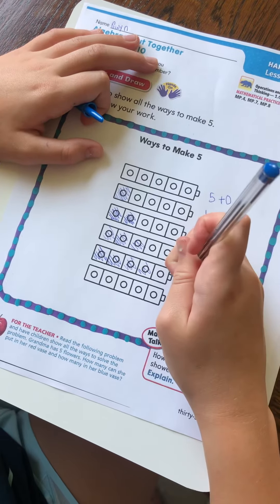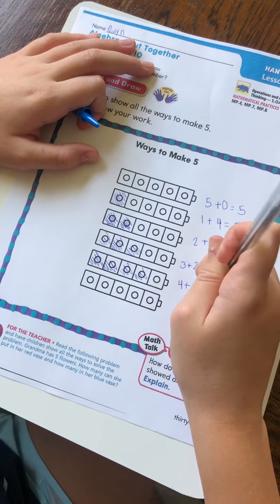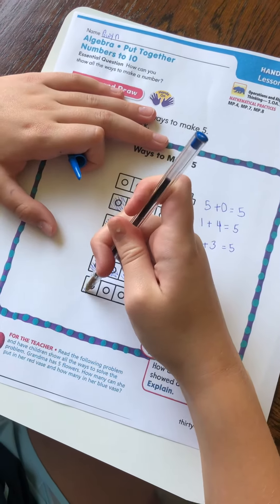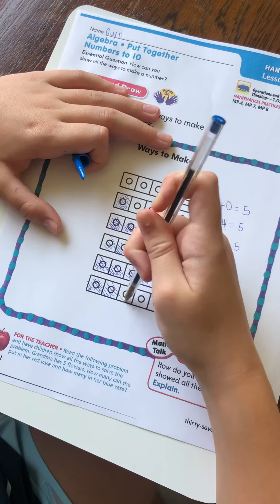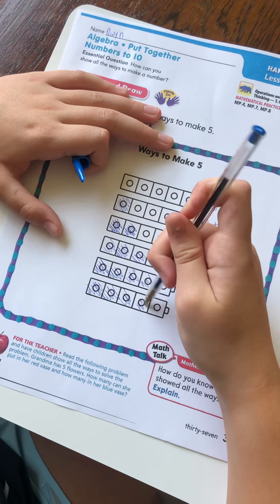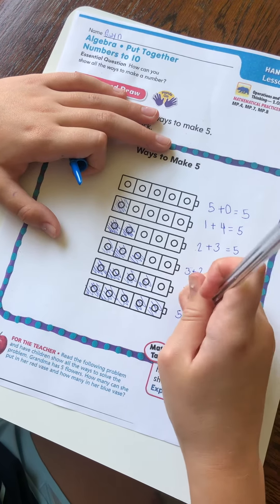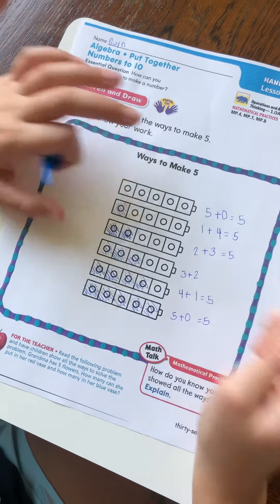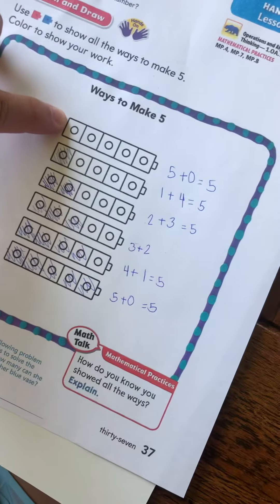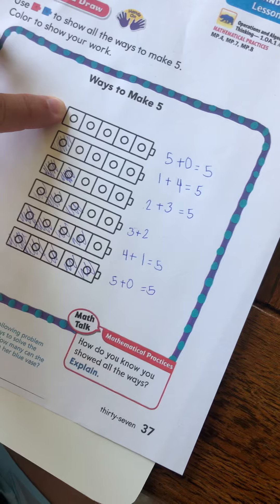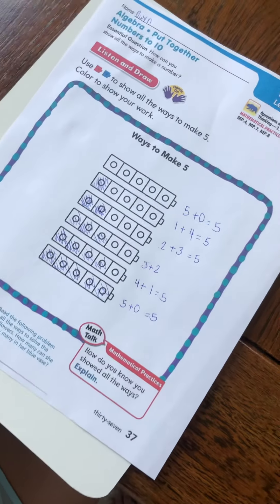4 plus 1 equals 5. And right here if I color all of the blocks, I could do 5 plus 0 equals 5. I don't think that's right because when you had none colored you put 5 plus 0 equals 5, so you would have to put something different if you colored them all.